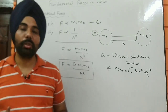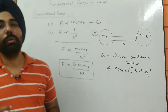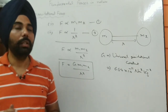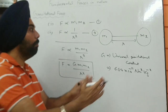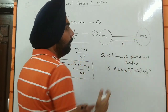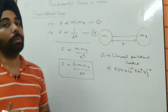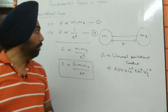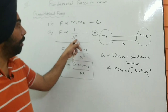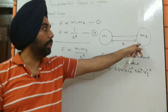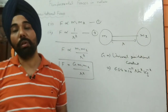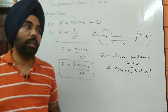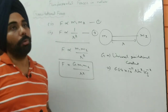Now, what are the properties of gravitational force? First, that force only depends upon the mass of the bodies. Second, it is inversely proportional to the square of the distance between them, which means it obeys the inverse square law — the greater the distance, the weaker the force.